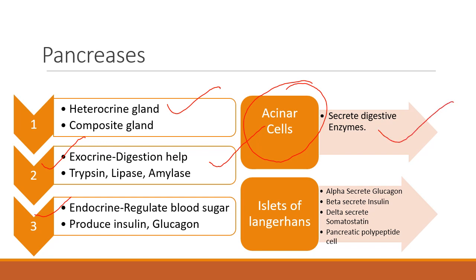Second, as an endocrine gland, the pancreas regulates our blood sugar and releases insulin and glucagon. There are special cells called the Islets of Langerhans. They are divided into four types: Alpha, Beta, Delta, and PP cells — also called F cells. Alpha cells secrete glucagon, Beta cells secrete insulin, Delta cells secrete somatostatin, and pancreatic polypeptide cells — PP or F cells — release pancreatic polypeptide.